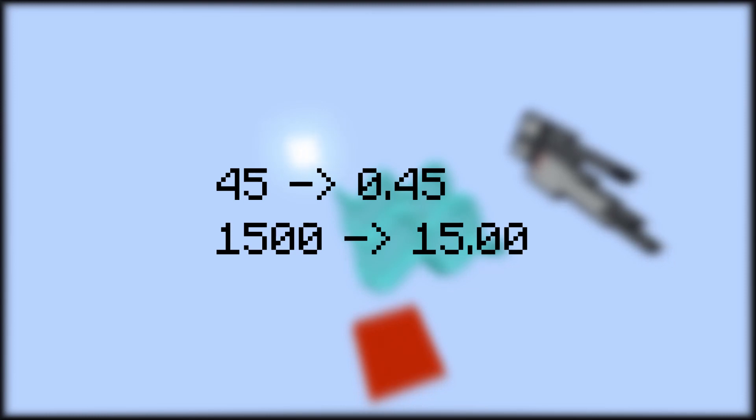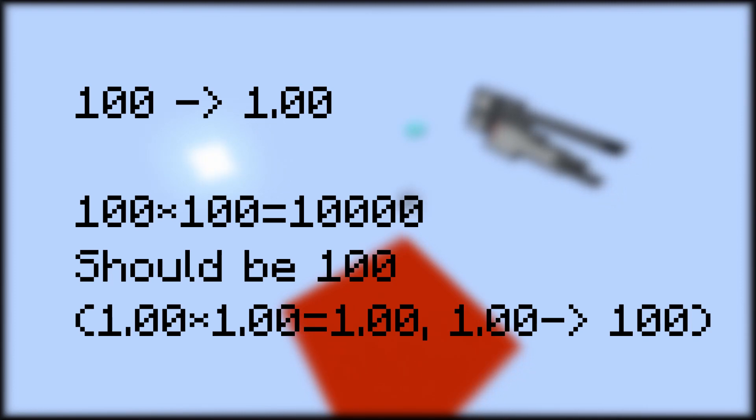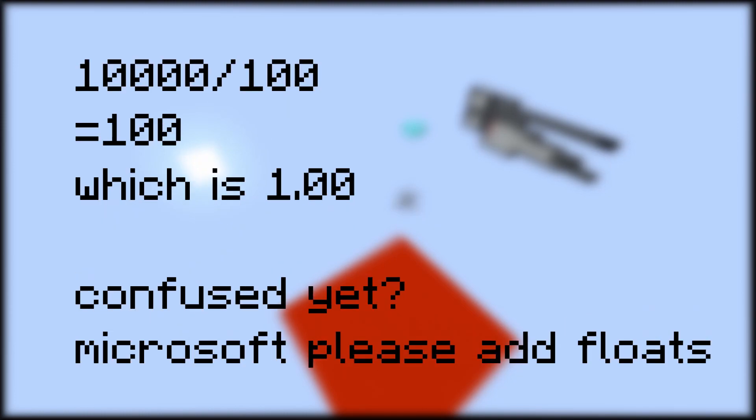Multiplication and division are strange, however, because scoreboards only use integers — all calculations use a fixed point system. This means that numbers such as 45 are actually 0.45 and 1500 is 15.00. Adding and subtracting does not cause problems in the system, but because these two numbers are increased by a factor of 100, the result must be changed by a factor of 100 as well. For example, 1.00 times 1.00 would be treated as 100 times 100, which is 10,000. The number we would need is 100, which is 1.00, so 10,000 would have to be divided by 100. For division, the number would have to be multiplied by 100 instead.